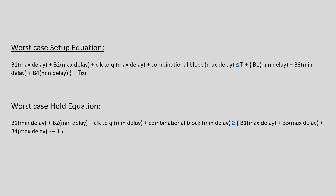Similarly, we can do it for hold as well. The worst case for hold is: launch clock is arriving early, data is arriving early, and the capture clock is arriving late. So the equation will be: min delay for clock buffer B1 plus min delay for clock buffer B2, clock-to-Q min delay, and min delay for the combinational block should be greater than or equal to max delay for clock buffer B1, plus max delay for clock buffer B3, max delay for clock buffer B4, plus t_hold.